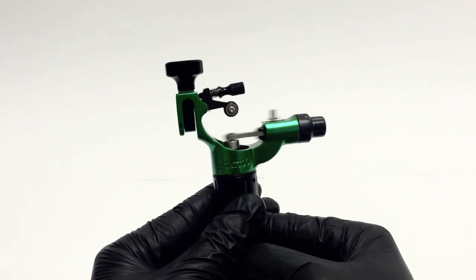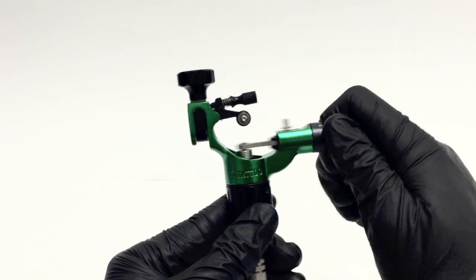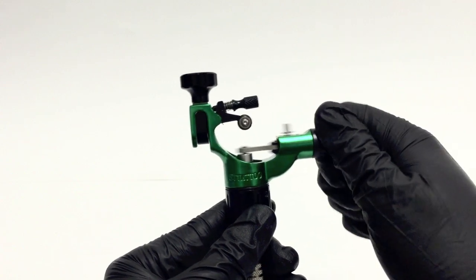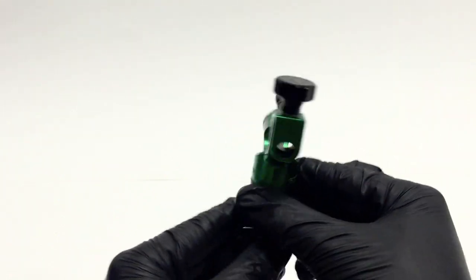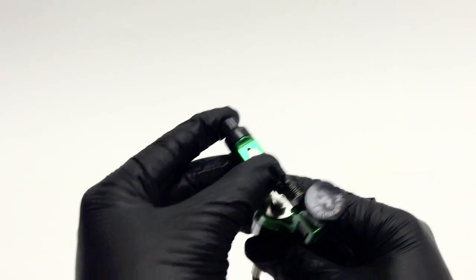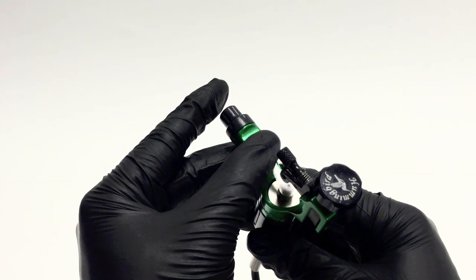The Hummingbird bearing machine is smooth and silent. As I'm running the machine, I can adjust the swing of it by just turning the adjustment knob. This machine really has the power to pack in lines, also great for packing in color and shading.